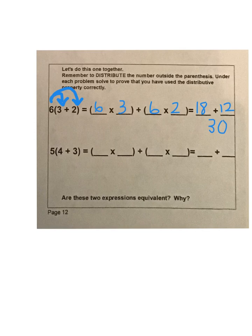Then our second one, we have 5 times 4 plus 5 times 3. So we have 5 times 4 is 20, 5 times 3 is 15. And our final answer is 35.